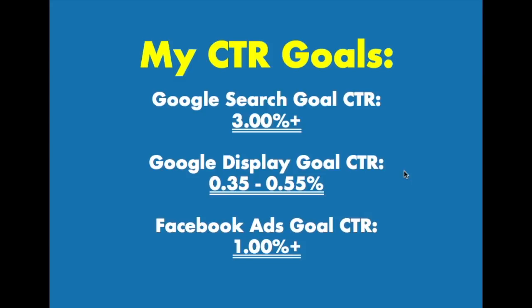For Facebook Ads, same thing — I want to be above average, at least 1%. If you can get this as high as possible, you'll see how important it is to get your click-through rate up. For Google Search, I've had clients with click-through rates above 12%, and I've seen larger accounts with click-through rates right around 3% to 3.5% that perform very well. It really depends on what you're targeting and what your keywords are.